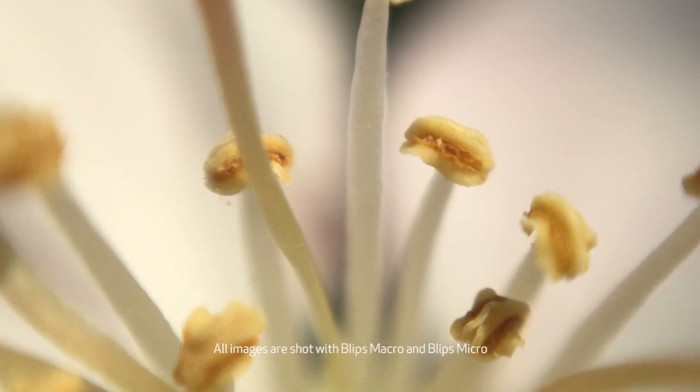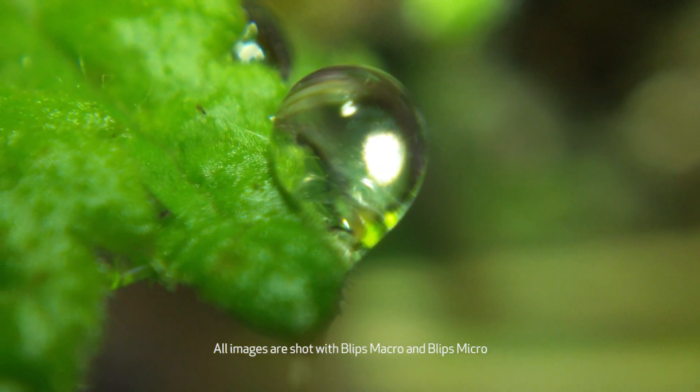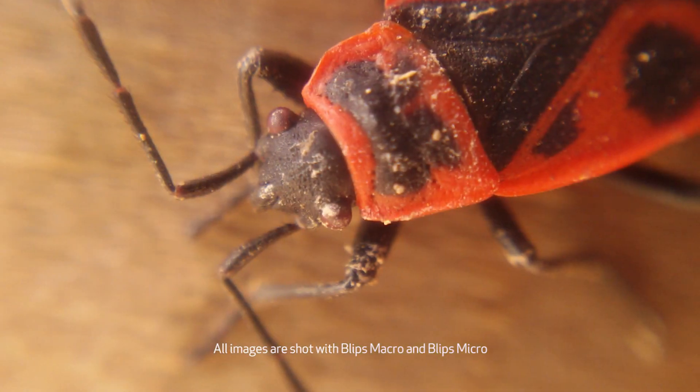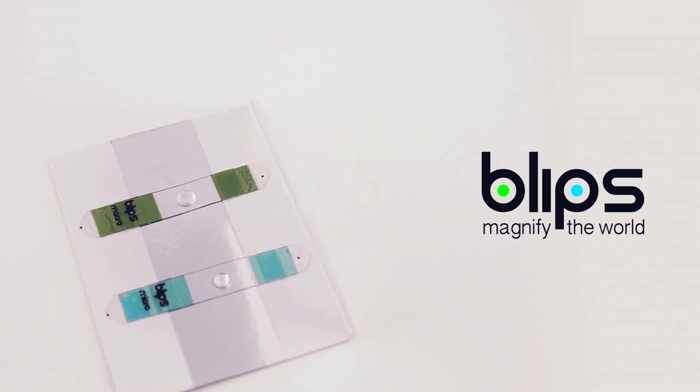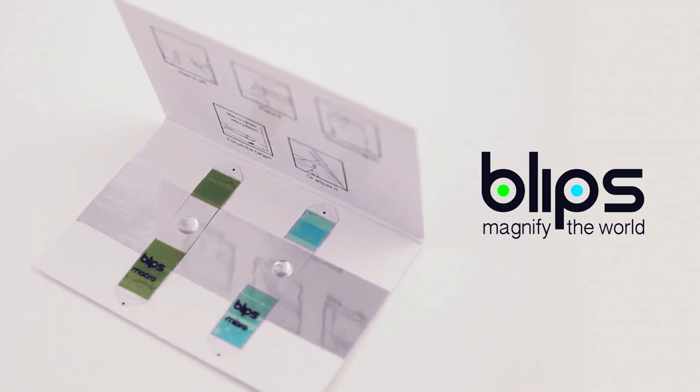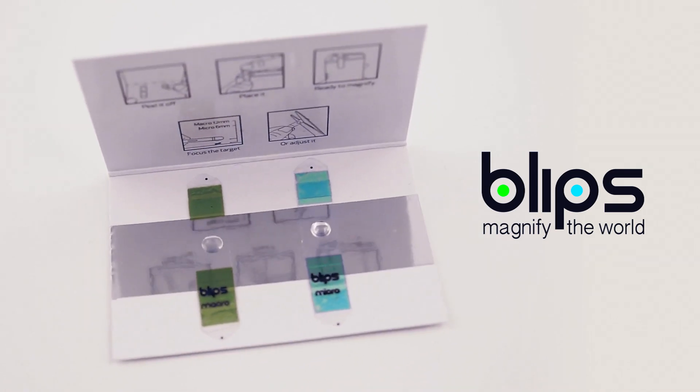What if you could see the world around you in a microscopic scale? Blips is the world's thinnest set of microscope objective lenses that will turn your smartphone into a digital microscope.